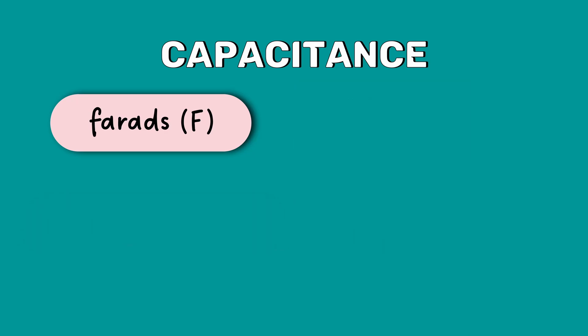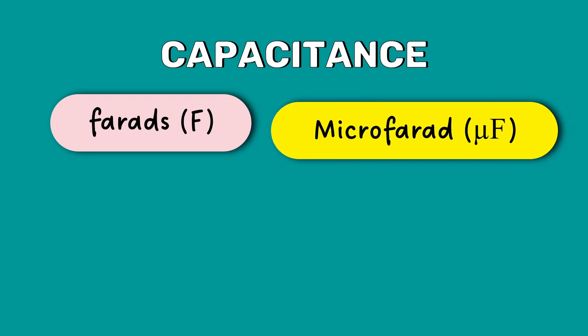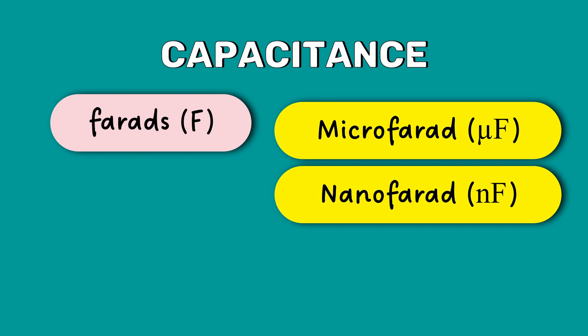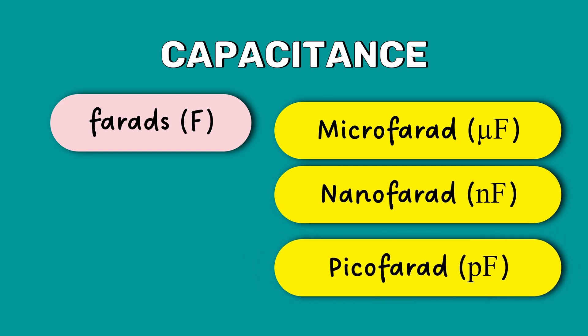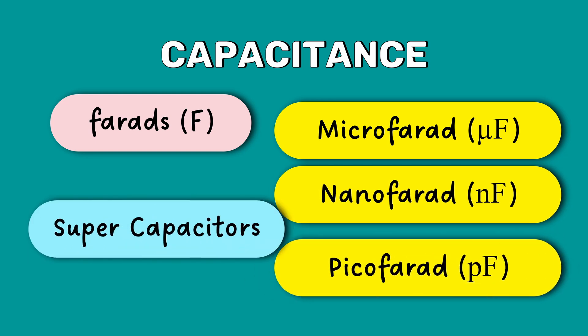A farad is a large quantity of capacitance. Most capacitors are measured in smaller quantities such as microfarad, nanofarad, and picofarad. On the other hand, supercapacitors can store huge electrical charges of thousands of farads.